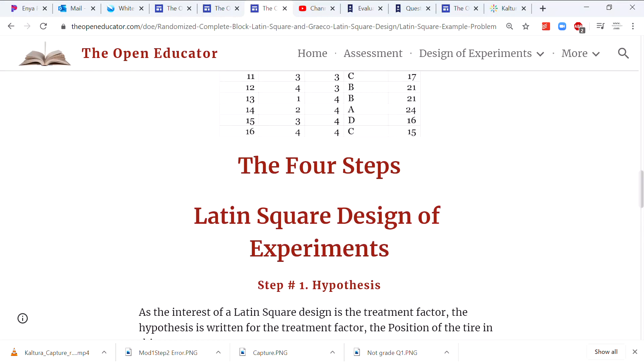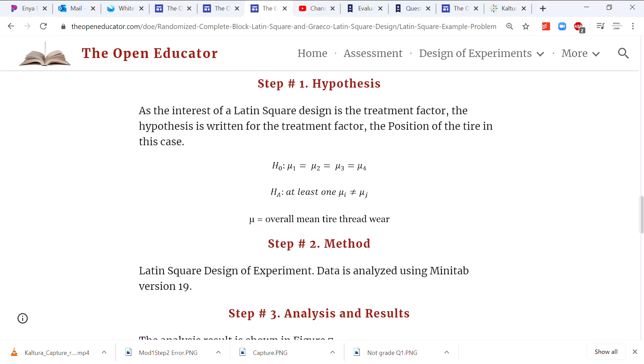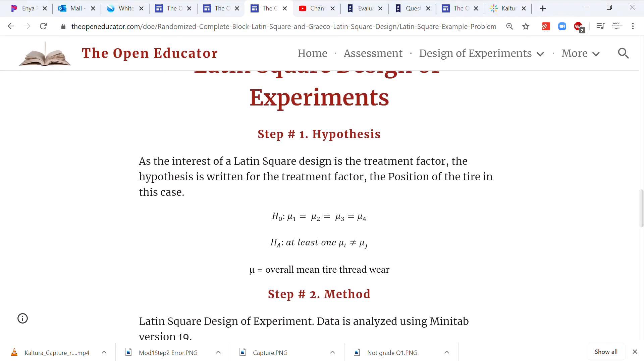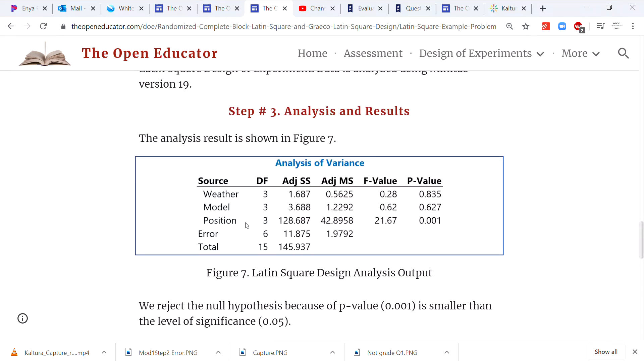The main interest is the position of the tire, which position is the best or worst in terms of tire wear. So the hypothesis is basically position 1 equals position 2 equals position 3 equals position 4 with respect to the tire wear. Now in the results we have found that the position is significant, so once you find it significant the next question is which one wears the most or which position is the worst.